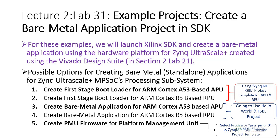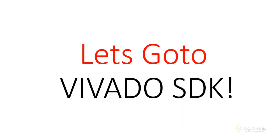We are going to use the Vivado project that was created and exported to SDK in section 2. We will just utilize that exported project and create new settings in the SDK session. The Vivado project remains the same as in Lab 2.1 from the previous section. The current operations in SDK involve creating the First Stage Bootloader for APU, First Stage Bootloader for RPU, and a bare metal application that includes the FSBL and hello application — plus a PMU project using the PSU PMU 0 processor and Zynq MP PMU firmware template.